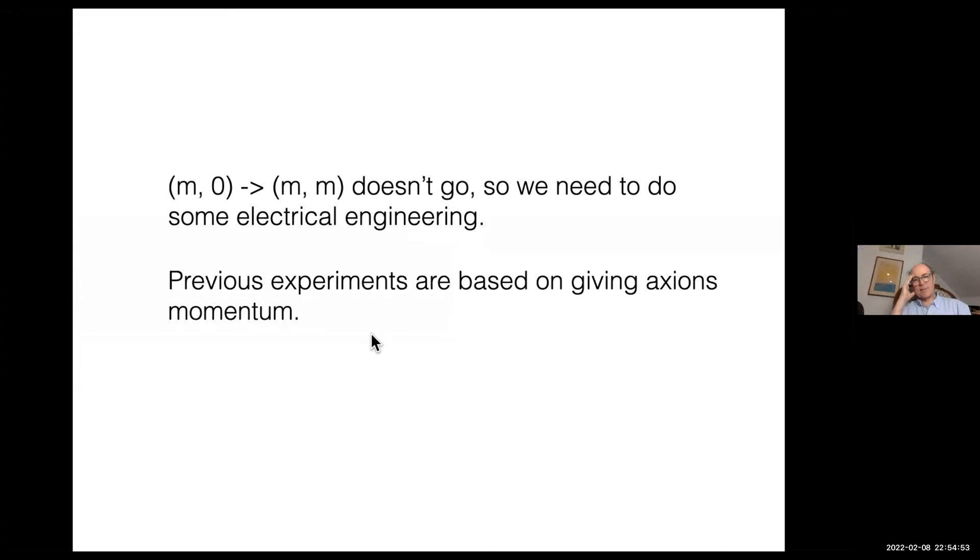You set up cavities or set up inhomogeneous materials that give the cosmic axions a kick and allow them to match the energy and momentum of a photon and convert resonantly. But there's a different approach. If you think about it, a different approach suggests itself: give the photon a mass. Then you match without giving the axion a kick. That's advantageous because it allows you to use homogeneous spatial structures.